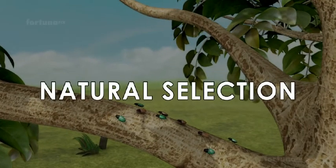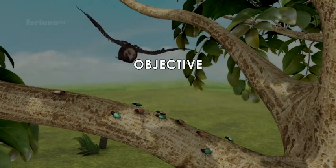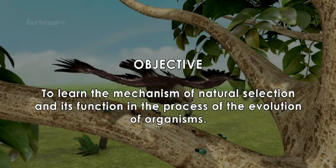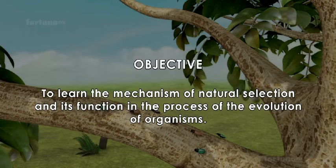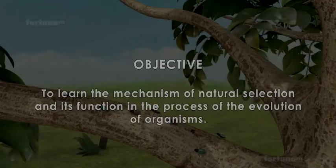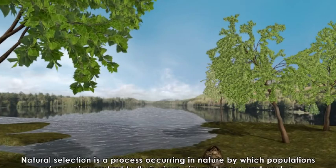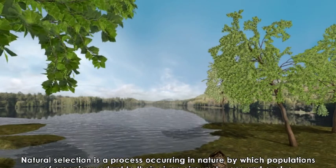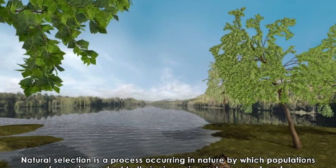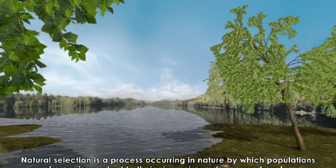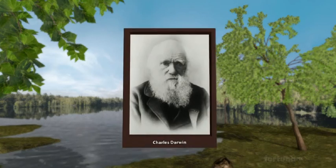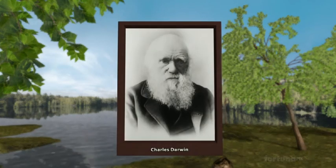Natural selection. Objective: to learn the mechanism of natural selection and its function in the process of the evolution of organisms. Natural selection is a process occurring in nature by which populations of organisms adapt to their given circumstances and evolve. The idea, which was first proposed by the British naturalist Charles Darwin, is considered an important mechanism of evolution.